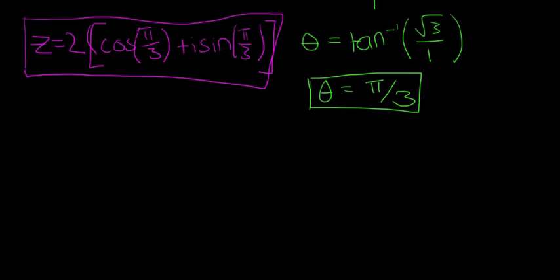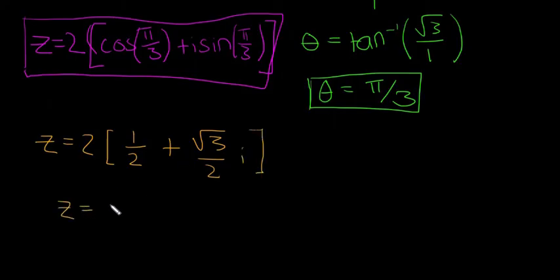And just to prove that to you, I'm going to work it out. So z equals 2 multiplied by, so if you stick that into your calculator, cos of pi over 3, make sure it's in radians mode, you're going to get a half. And then sine of pi over 3 is going to be the square root of 3 over 2i. So multiply this out, we're going to get 1 plus the square root of 3i.